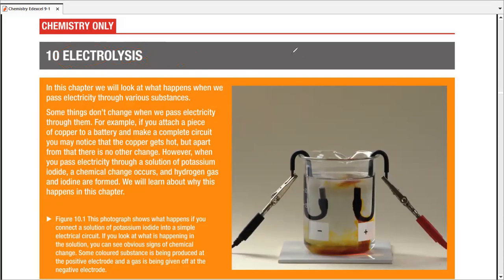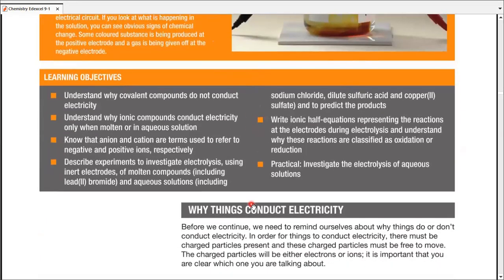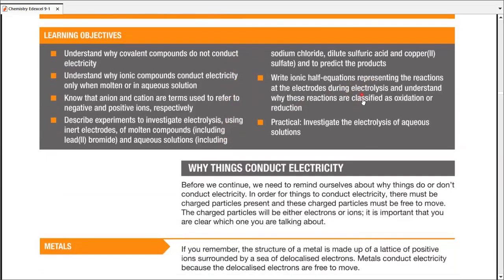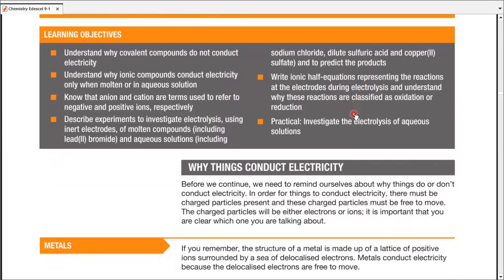When we talk about solid compounds, they're going to be ionic compounds, because metals either react with water or don't dissolve in it. Covalent compounds don't dissolve in water either — it's just ionic compounds that do. We'll begin with how solids and liquids conduct electricity, then discuss types of bonding and move towards electrolysis.